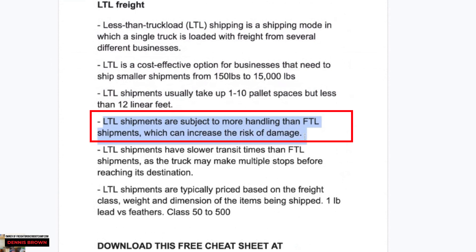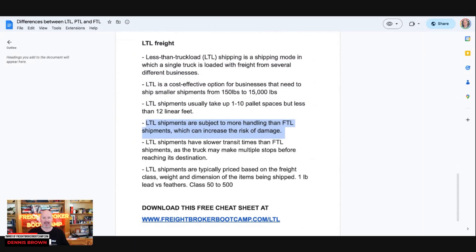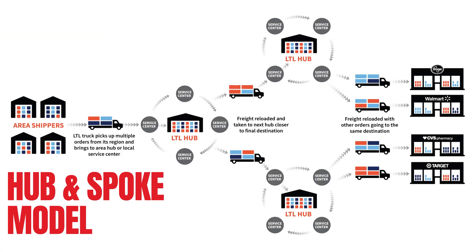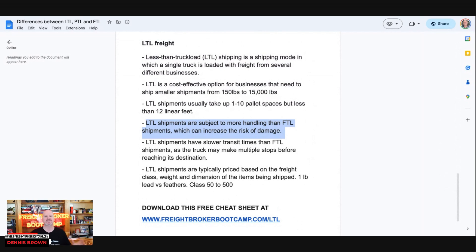LTL shipments are subject to more handling than full truckload shipments, which increases the risk of damage. LTL carriers use what's called a hub-and-spoke model. They load freight at your location — say in the Buffalo market — pick up a bunch of freight from local shippers, bring it back to a warehouse and offload it, then move it onto another truck from Buffalo to Chicago, another terminal. They may offload it there and load it to yet another truck. It's called interlining, and it's not the same truck that picks it up as the truck that delivers it — that's the biggest reason for increased damage claims.